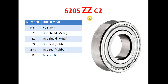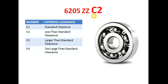The last digit indicates the internal clearance. If C1 is mentioned, it indicates less than standard clearance. If C2 is mentioned, it indicates standard clearance. If C3 is mentioned, it indicates larger than standard clearance. In this video we have described all the digits and their descriptions in detail.